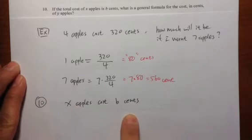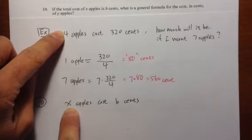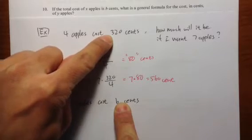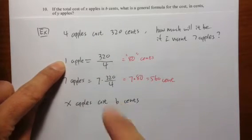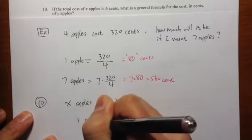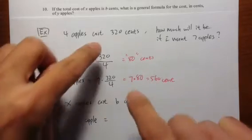Just by looking at this, how much does each apple cost? The X exactly matches with the 4 and the B matches with the 320. To figure out how much each apple costs, one apple will cost you take B, the total cost.